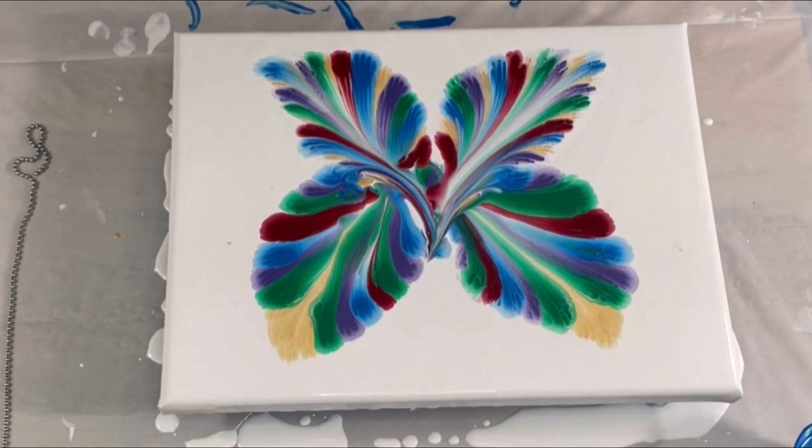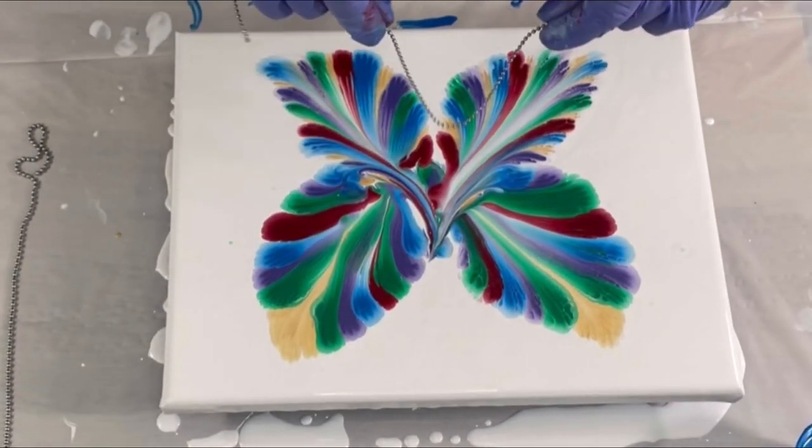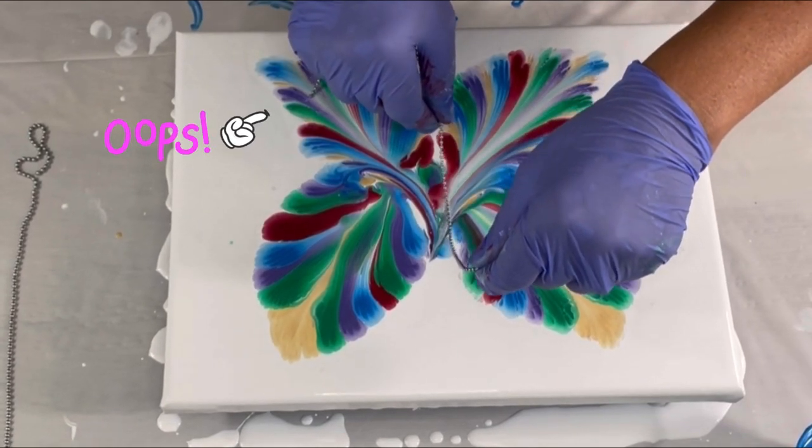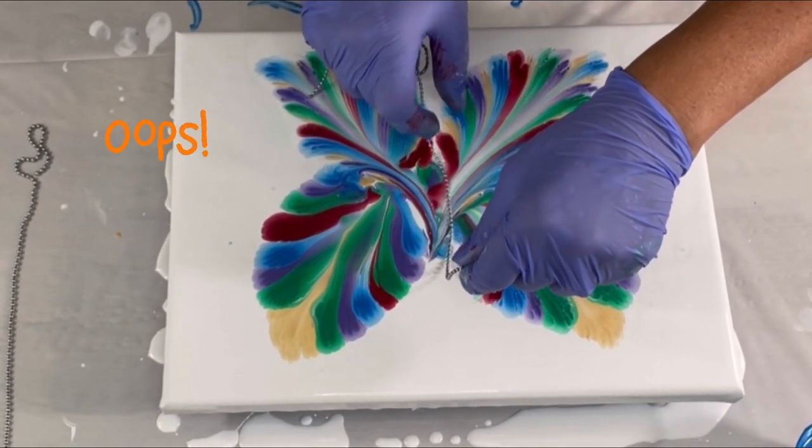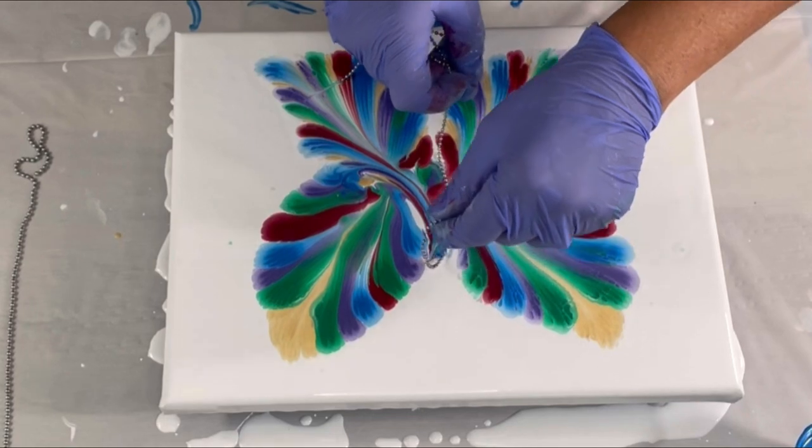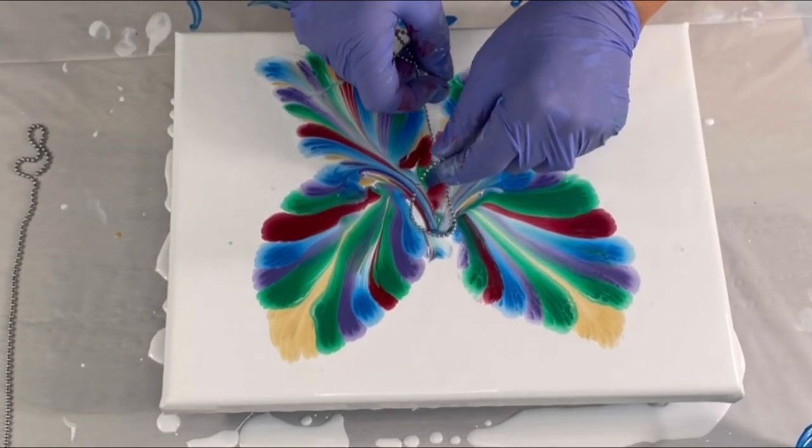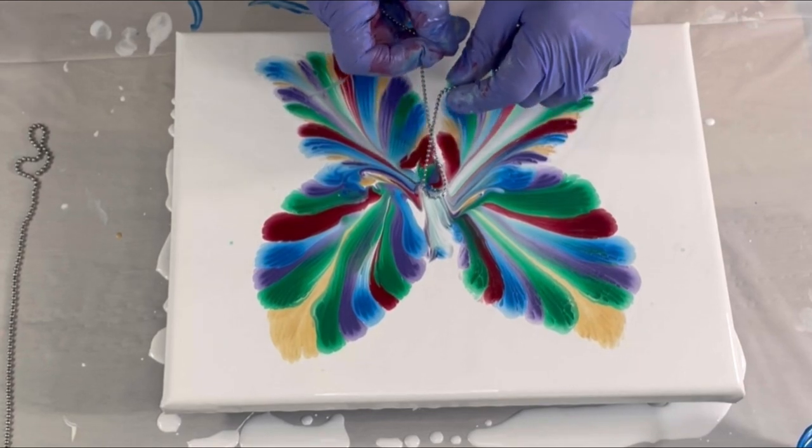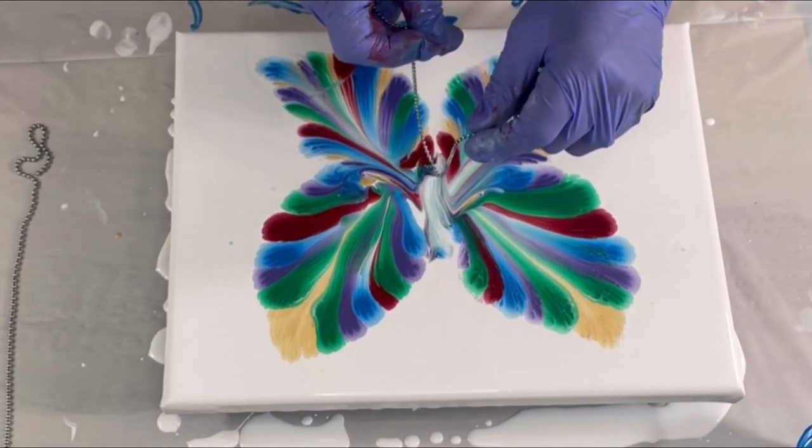Now I have a thinner chain that I'm going to do the middle with. So I'm going to do this. There is too much paint there.